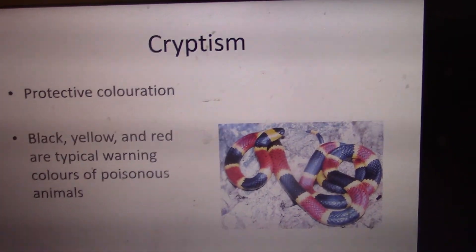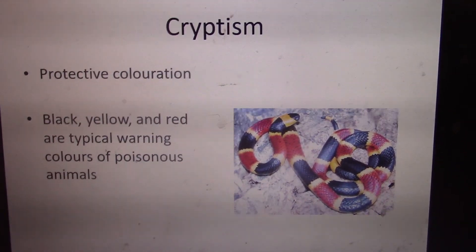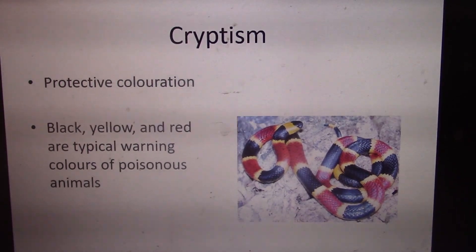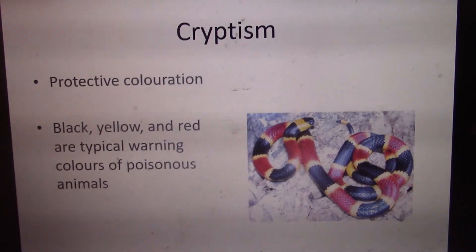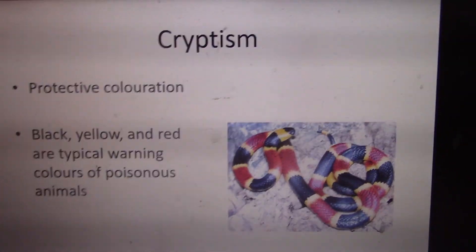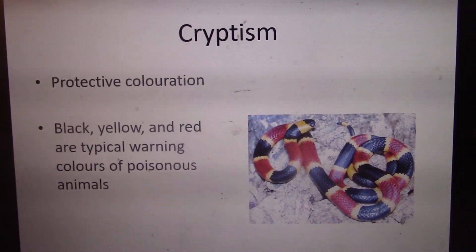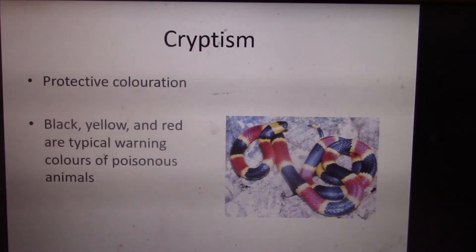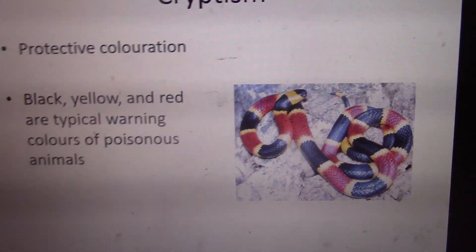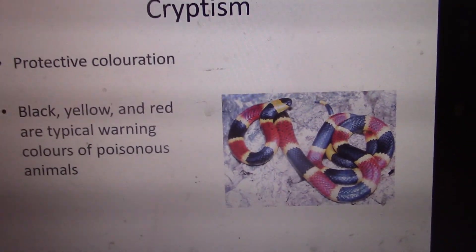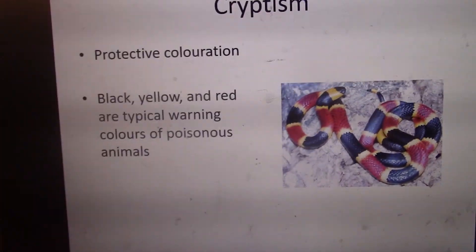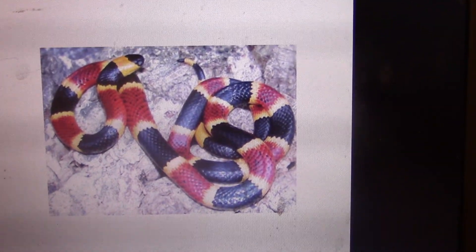Crypticism is universal in the animal kingdom. Interestingly, black, yellow, and red are colors that have evolved through natural selection to universally signify that an organism is harmful — this spans across all continents and the entire animal kingdom. All organisms uniformly recognize these animals as dangerous. Animals with this cryptic coloration are generally warning animals, likely poisonous or with some virulent property that others should avoid. The coral snake is a good example — it's very poisonous.